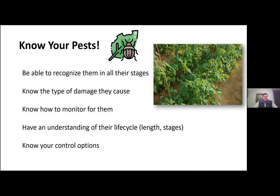You should also be able to associate the type of damage you see with the insects that cause that damage. Because a lot of times, the insects may be hidden and the damage is not hidden. What you're going to come across is the damage before you see some of these high tunnel tomato pests. Be able to associate that damage or signs of damage with the type of pest causing it. Also, know how to monitor for your pests.